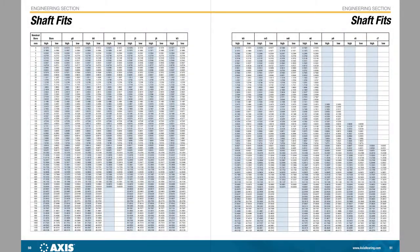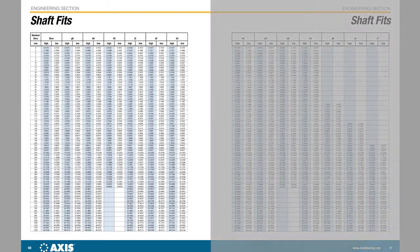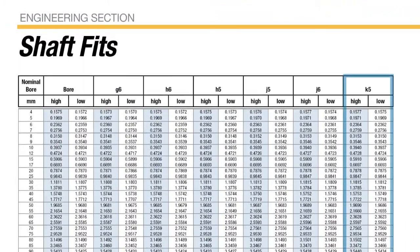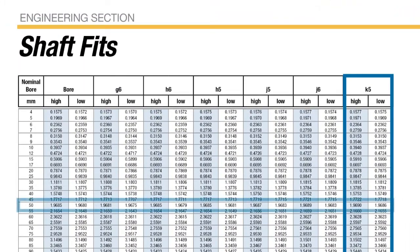Let's flip to the shaft fit tables on the next page. Locate the K5 column and follow it down to the 50 millimeter nominal bore of the bearing in our example. Where the row and column intersect are the high and low measurements in inches for a shaft diameter that will ensure a proper K5 fit.